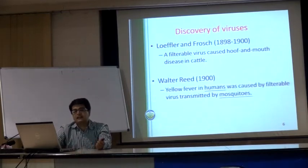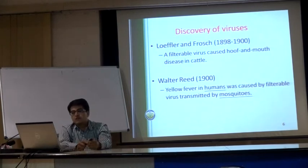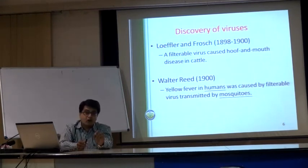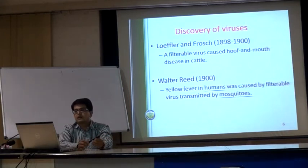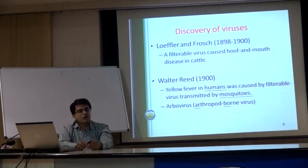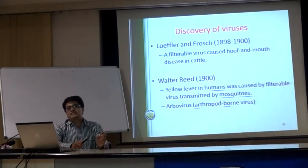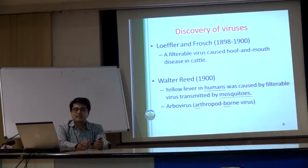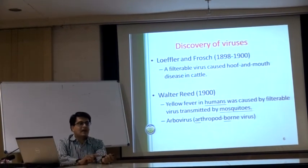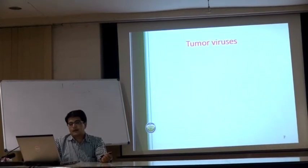Walter Reed in the 19th century studied yellow fever — a disease in humans caused by a filterable virus transmitted through mosquitoes. Here, people came to know about the role of vectors in transmitting disease between two separate living communities. He introduced a group of viruses which we nowadays call arboviruses — arthropod-borne viruses — mainly responsible for transmitting disease between animals and humans.